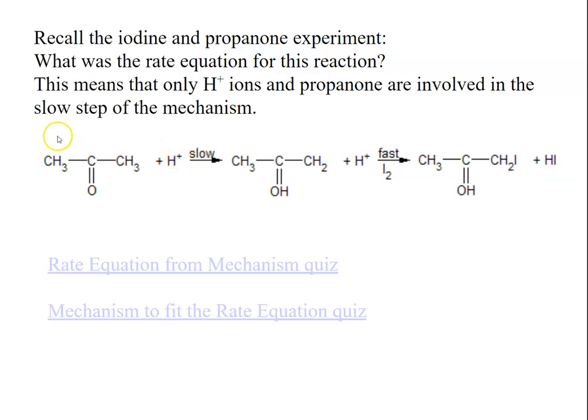So it's only those two things that appear in the rate equation. Iodine comes in and reacts here in the fast step, and as it's the fast step, it has no overall impact on the rate of the reaction. You need to look at the slow step to determine the rate equation.